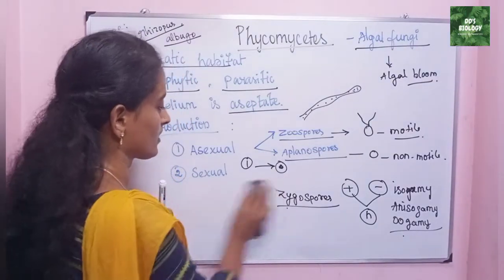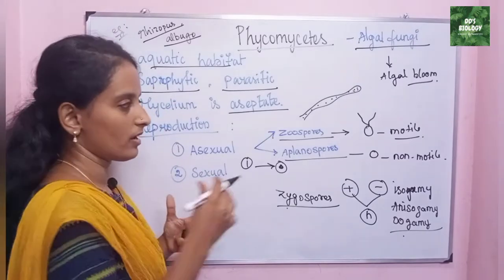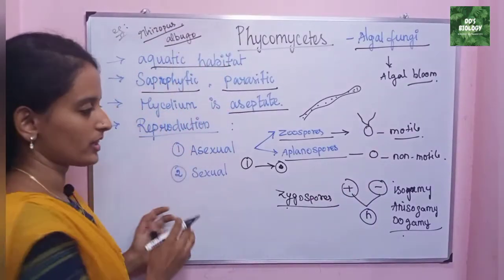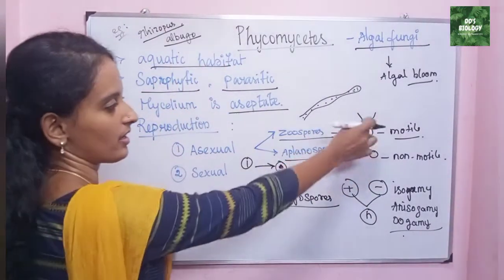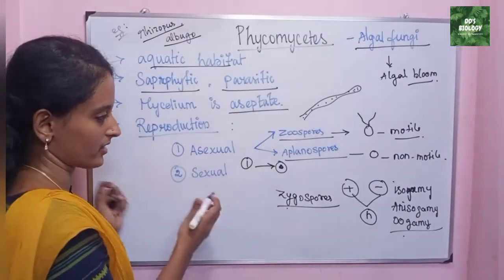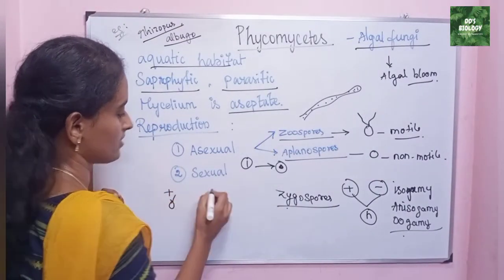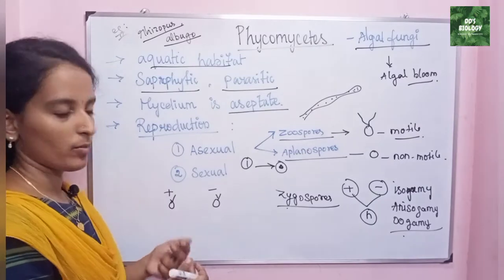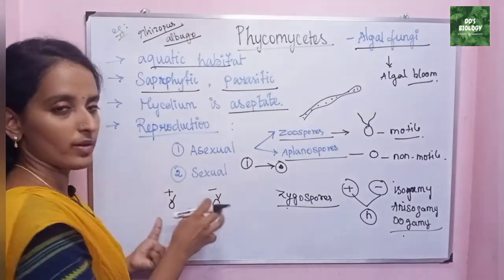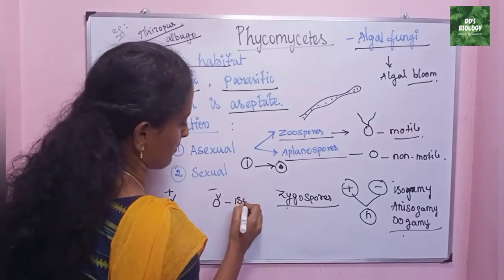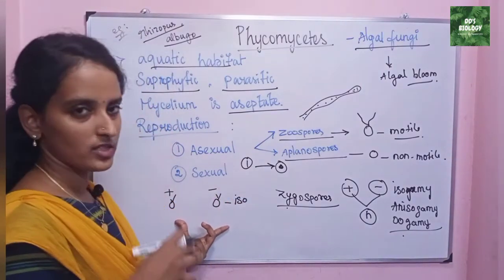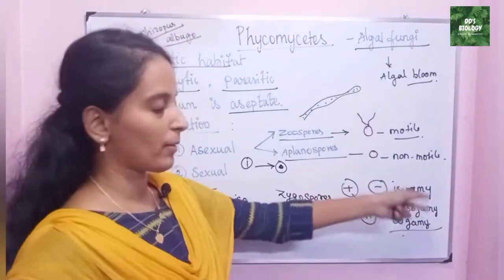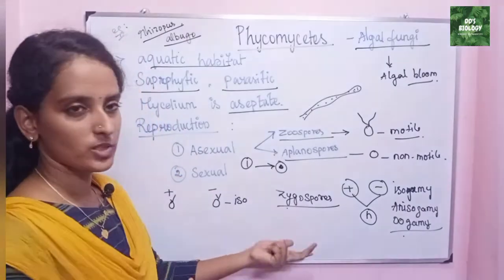Isogametes — they do not have flagella. If there are two variations of the strain, plus strain has flagella and minus strain has flagella. These two mates are similar morphologically and anatomically — the structure is similar. When two morphologically similar gametes fuse, it is called isogamy.